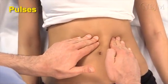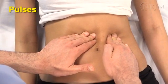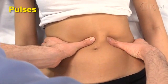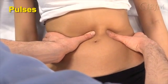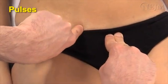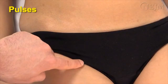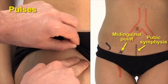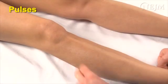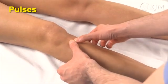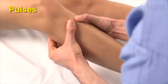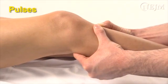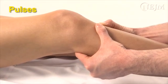Use two hands to palpate the aorta above the umbilicus and slightly to the left of the midline. Palpate the common femoral pulse just below the groin crease at the level of the mid-inguinal point — the middle of a line running from the anterior superior iliac spine to the pubic symphysis. With the patient's knee slightly flexed and relaxed in your hands, palpate the popliteal pulse, which is not always readily palpable. It is easiest to feel with the index and middle fingers of both hands deep in the popliteal fossa while your thumbs rest on the tibial tuberosity.